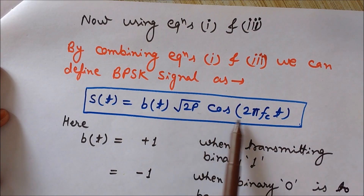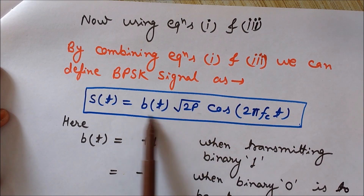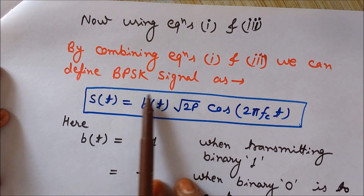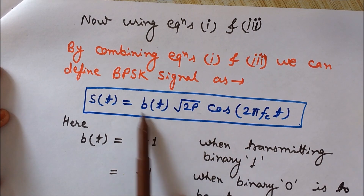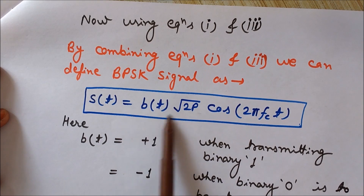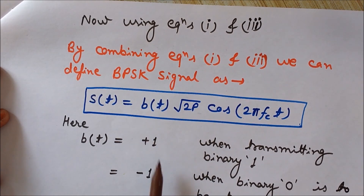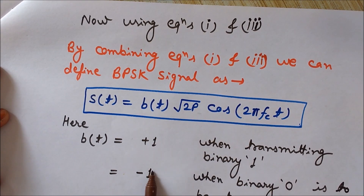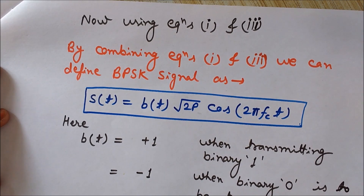We can combine these two equations into one: s(t) = b(t) · √(2P) cos(2π fc t), where b(t) represents the binary symbol — b(t) = +1 for transmitting binary 1 and b(t) = −1 for transmitting binary 0.